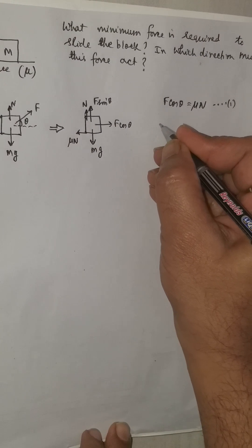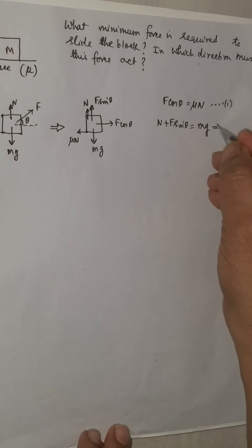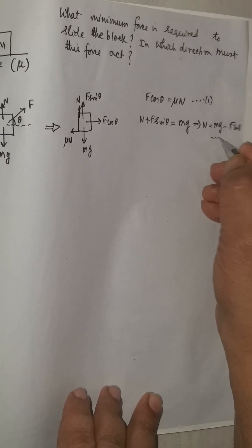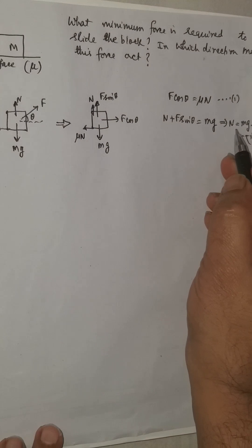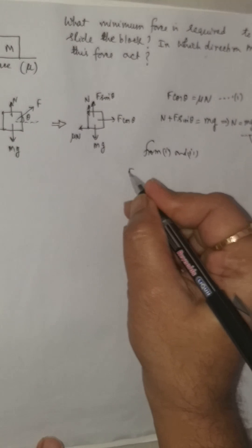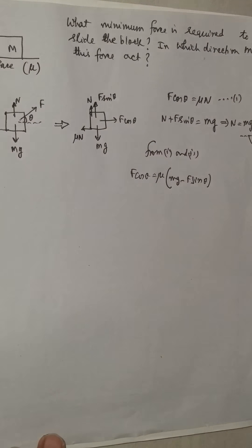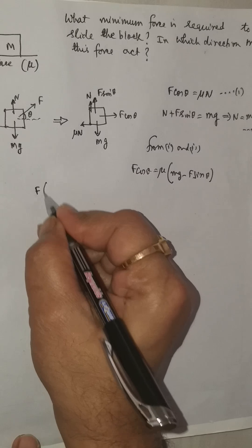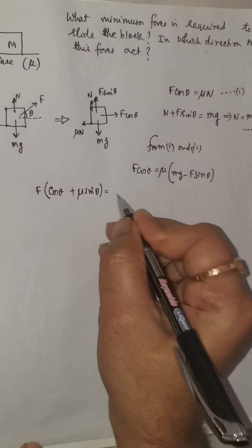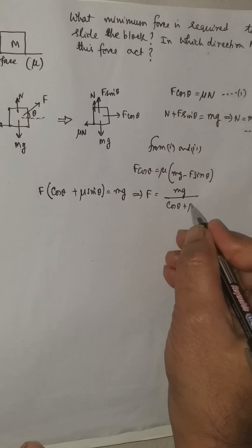The vertical equilibrium gives N plus F sin theta equals Mg, from which we calculate N as Mg minus F sin theta — let us take this as the second expression. Substituting this value of N into the first equation: F cos theta equals mu times (Mg minus F sin theta). Collecting all F terms: F(cos theta plus mu sin theta) equals mu Mg, therefore F equals mu Mg divided by (cos theta plus mu sin theta).